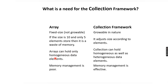Arrays can hold only homogeneous data elements, meaning data of a single type — for example, an integer array stores only integers, a string array stores only strings. But collections can hold both homogeneous and heterogeneous data elements, meaning different data types can exist inside a single collection. Memory management is poor in arrays, but very effective in collections because collections adjust size according to the elements present.